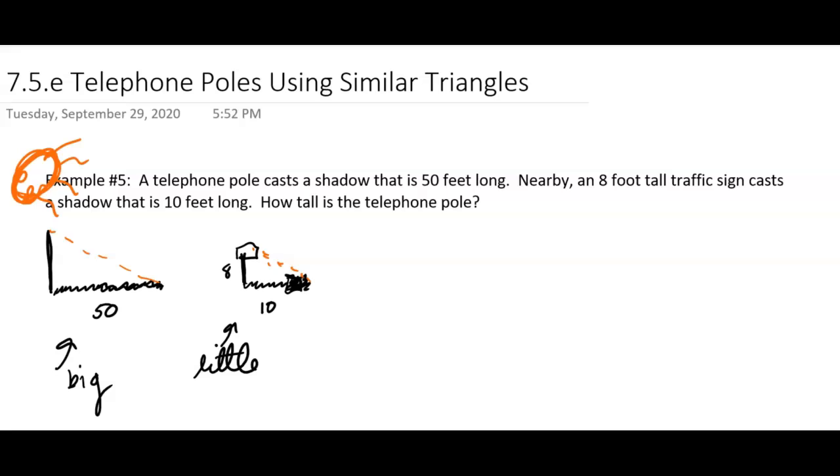And so we know that these are similar triangles because that angle isn't changing of the Sun. The Sun is the same angle, you have this is the same angle, and so they have to be, those are both right angles, they have to be similar triangles because of that.